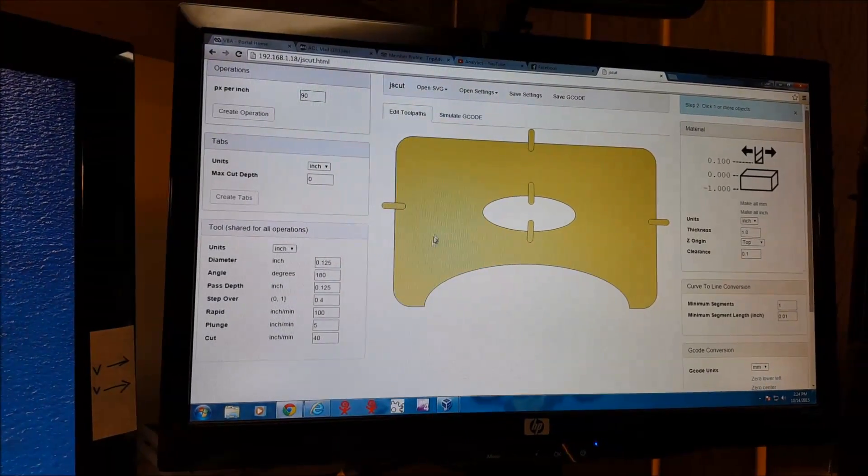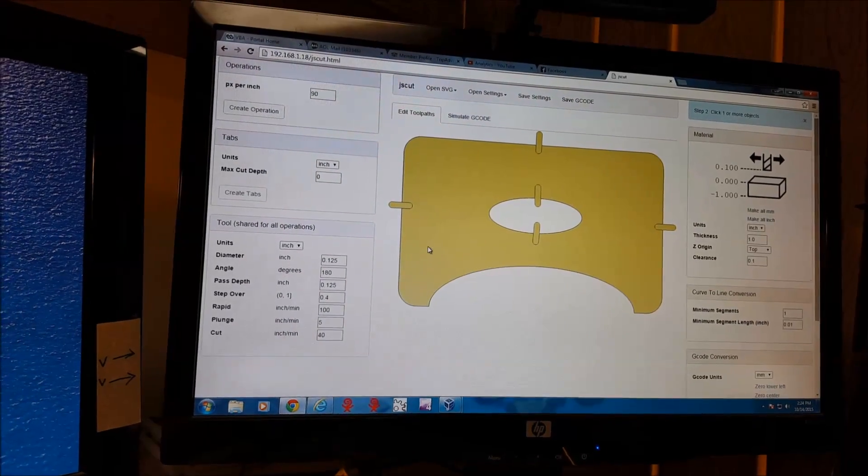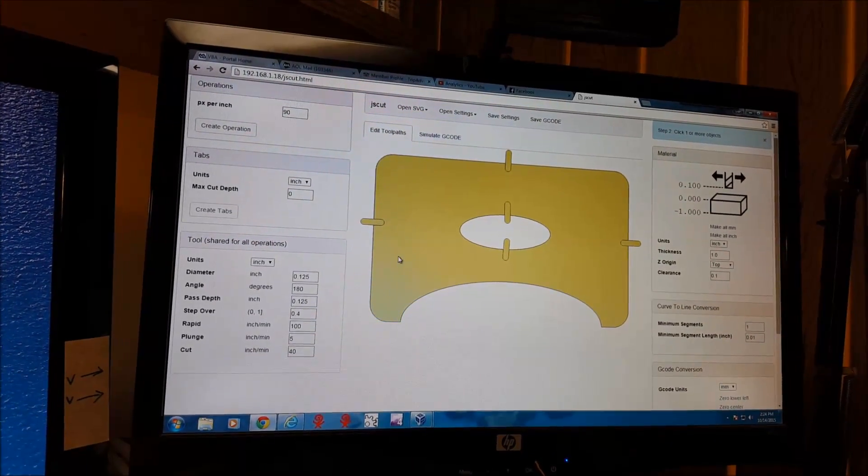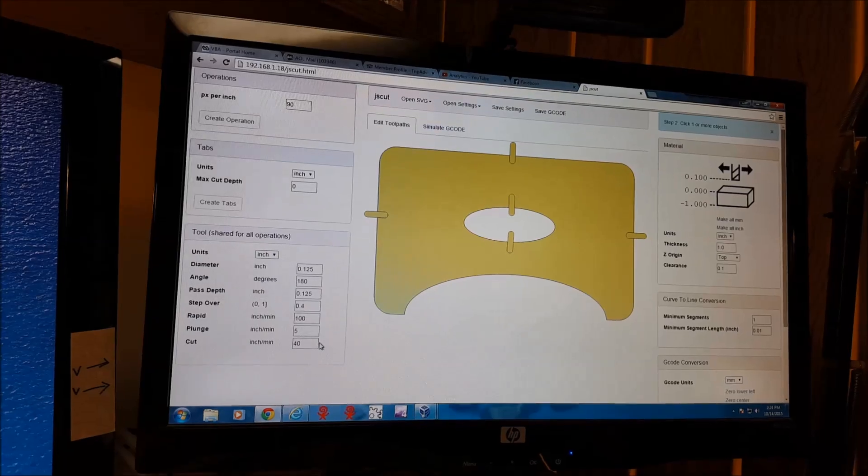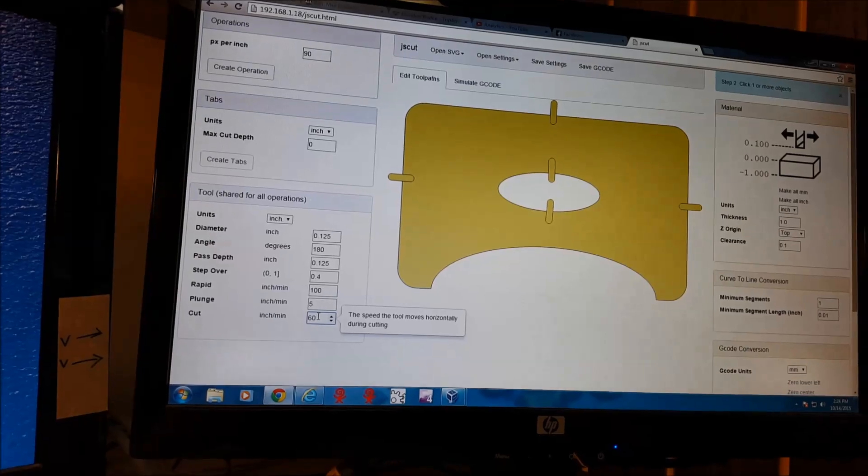Okay, we're in JS Cut. A real great program to design your toolpaths. It's free. You can do it online, in the browser, or you can set it up to run locally. First thing we're going to do is change this over to a little faster cut. We're going to go to 60.